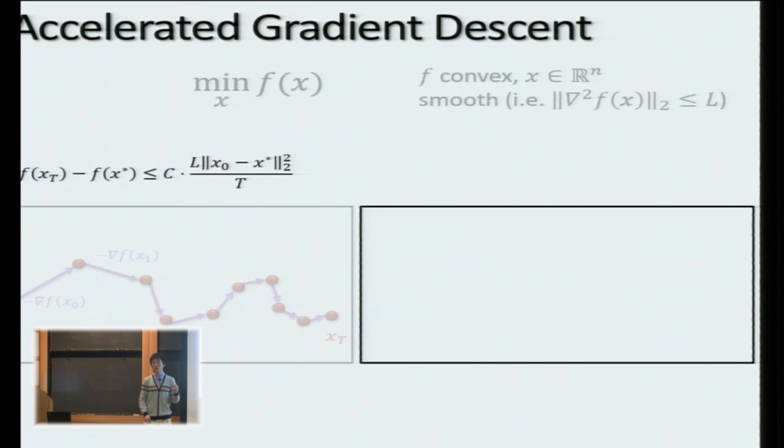Now, accelerated gradient descent does one more thing fancier on top of gradient descent. That is momentum. So in the first iteration, it does the same thing. But starting from the second iteration, it tries to remember how much I have moved in the most recent iteration and also keeps moving in that direction. In particular,